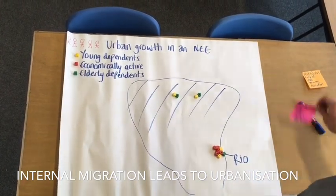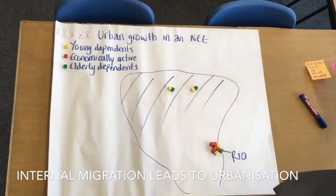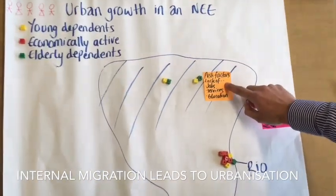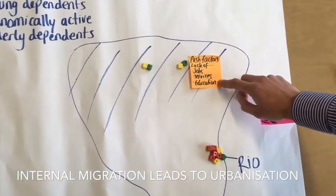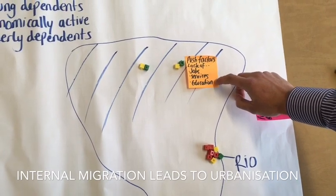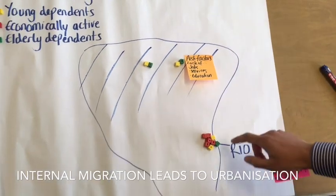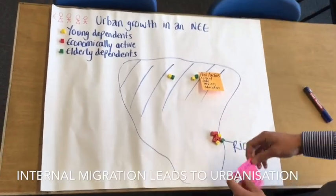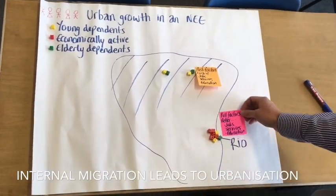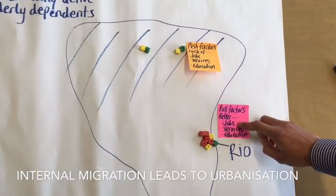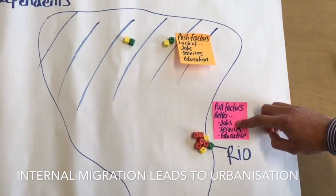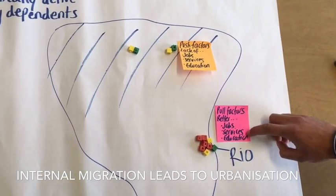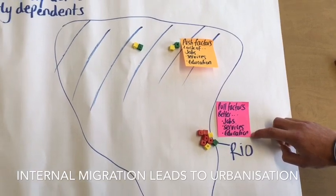They have been pushed away from the rural areas due to lack of jobs, lack of services, and poor access to education. The pull factors to Rio are better jobs such as those in the tertiary industry where they can earn more money, better access to services, and better opportunities for education. So these people have decided to migrate there.